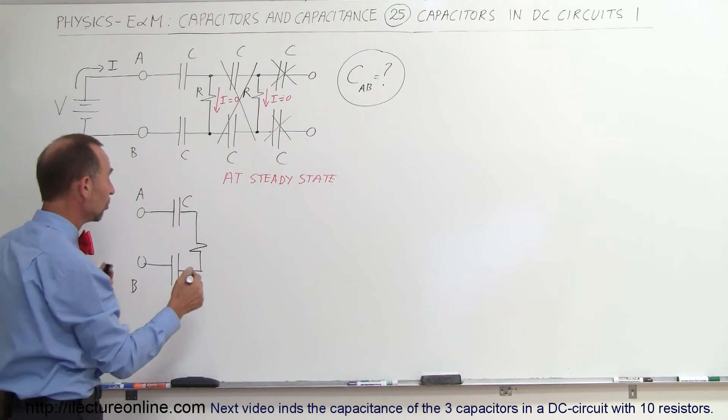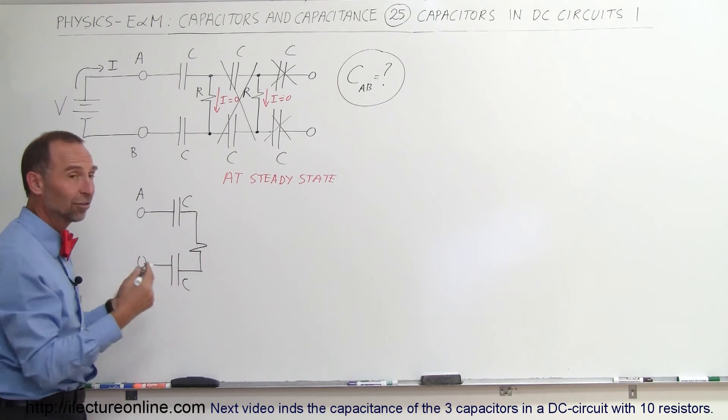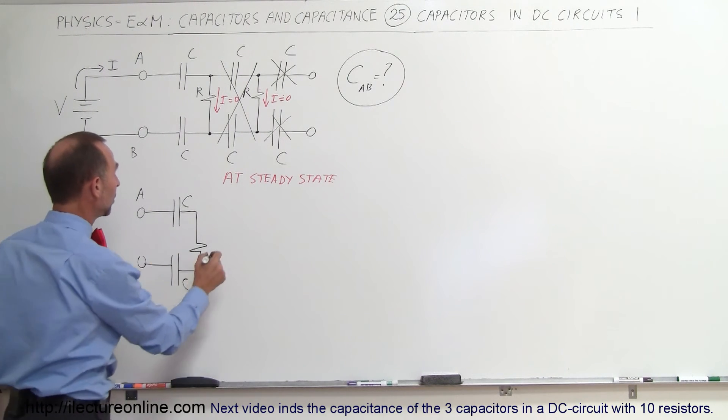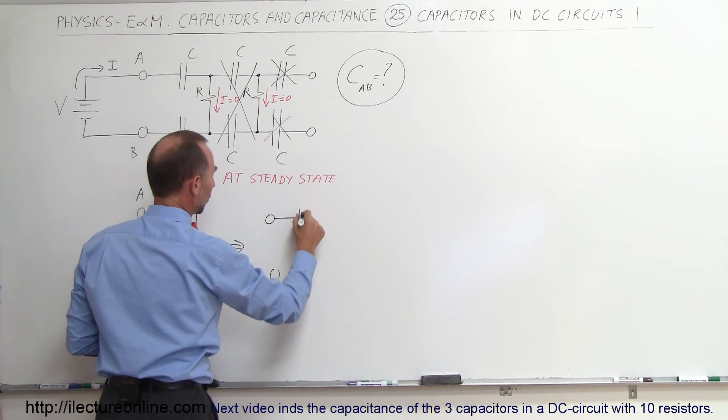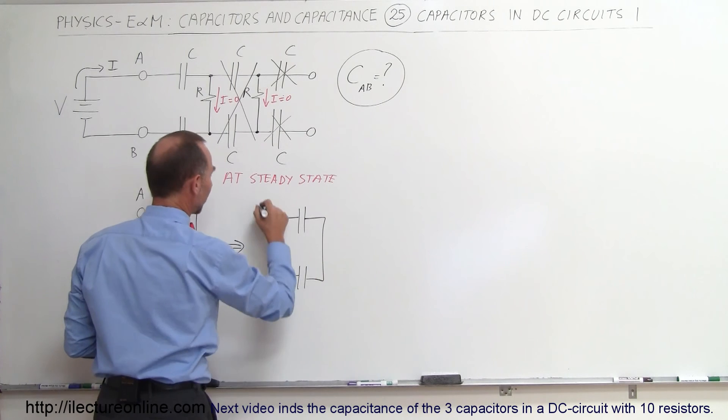And of course, once the charge has stopped flowing, there's no more any current, the resistor would act as if it's not there, and now what we would have then is essentially simply two capacitors connected in series.